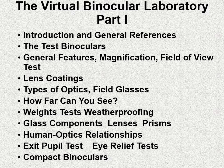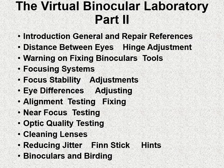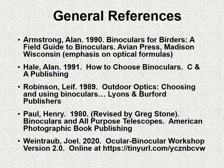Part one looked at general features of binoculars, the optics, and some aspects of human binocular interaction. Part two is going to look at binoculars in the field and some of the problems you may find when using them. We're going to try to make you aware of those problems and suggest some potential fixes. We'll end this part by talking about cleaning lenses, reducing jitter, and birding.